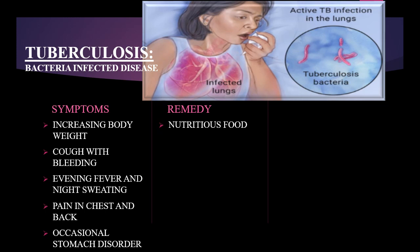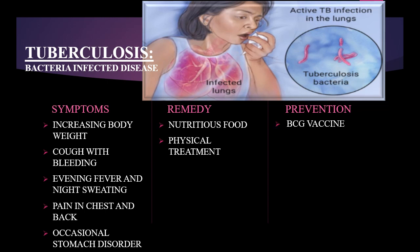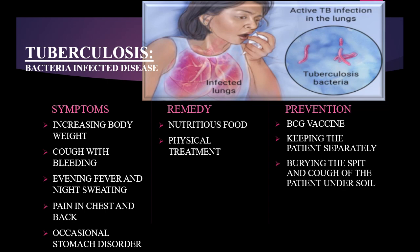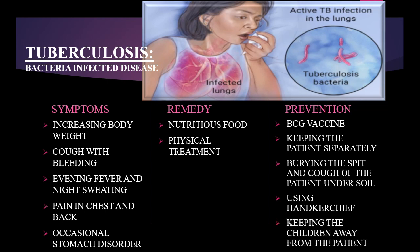The remedy for tuberculosis includes nutritious food and physical treatment. For prevention: take the BCG vaccine, keep the patient separately, bury the spit and cough of the patient under soil, use a handkerchief, and keep children away from the patient. These are the symptoms, remedy, and prevention of tuberculosis disease.